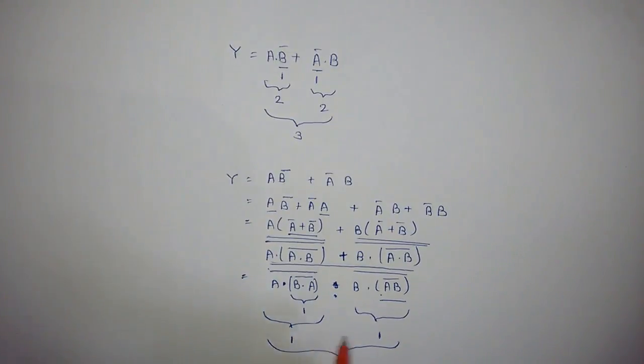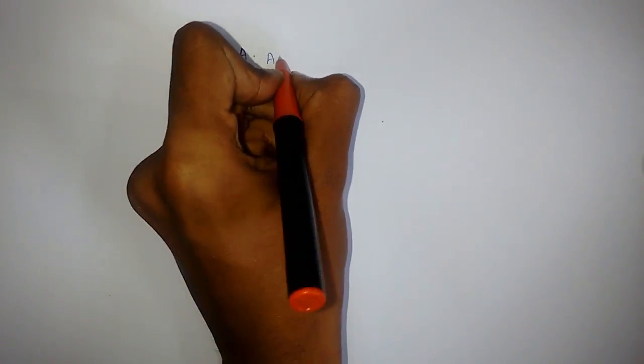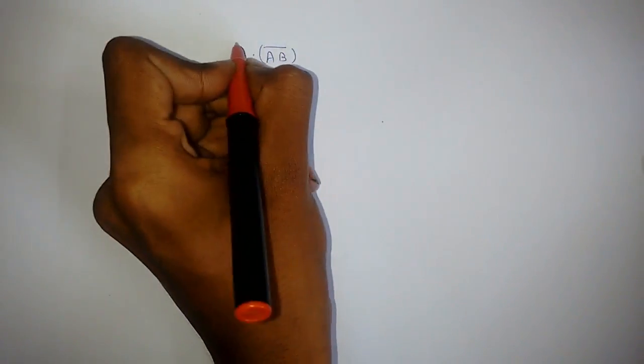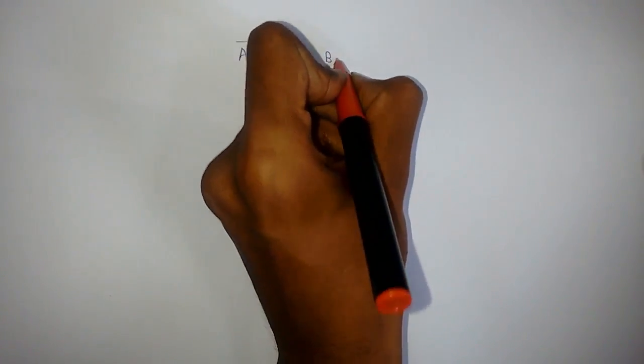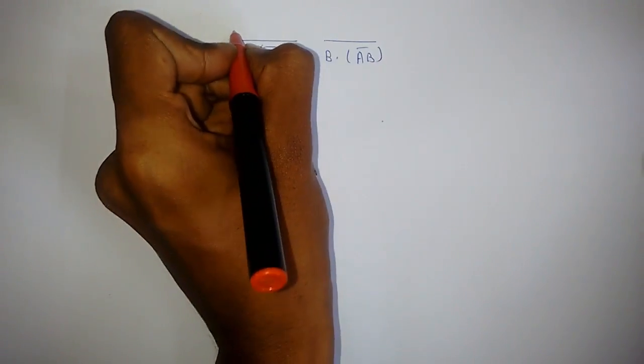So in total we will require four gates only. I will write it again: A dot A B-bar complement, dot B dot A B-bar complement, and whole complement.